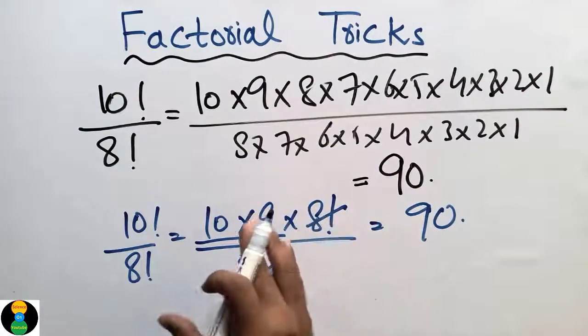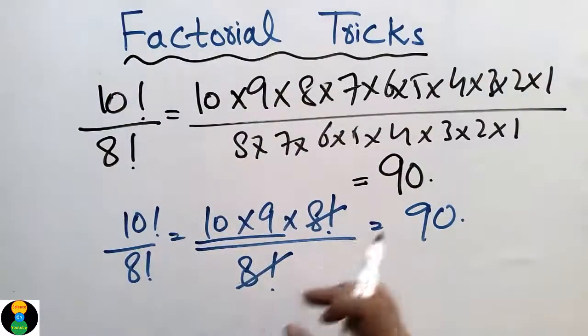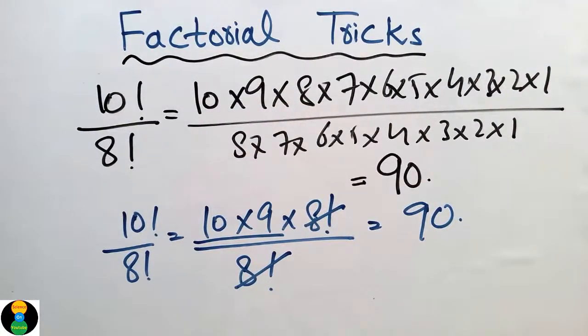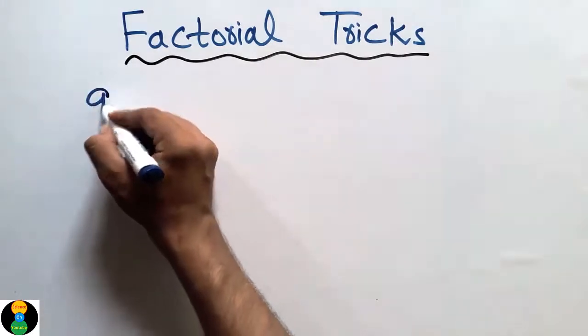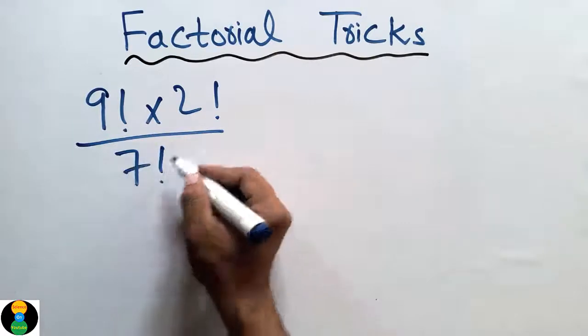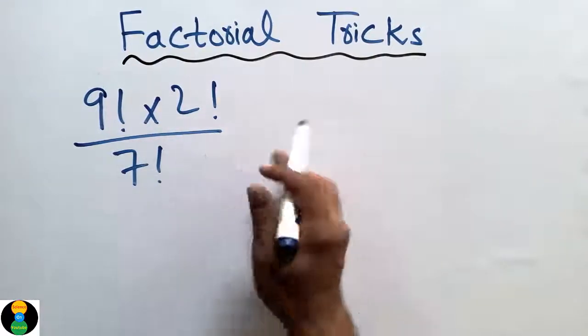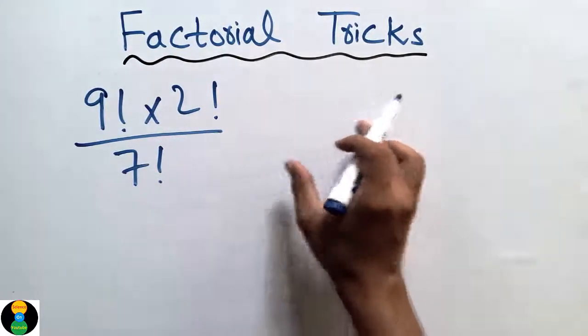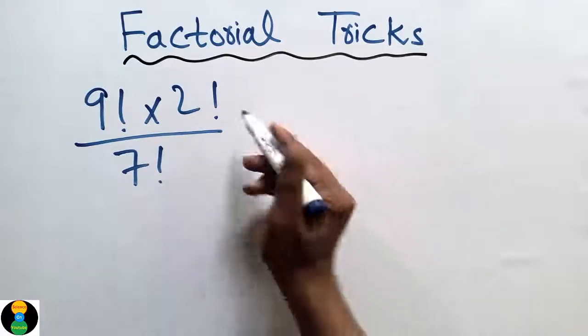Now other type of examples: if you are given this type of question, 9 factorial into 2 factorial divided by 7 factorial. This type of equation can be very complicated for you if you don't know the tricks, but we can find this just in two steps.